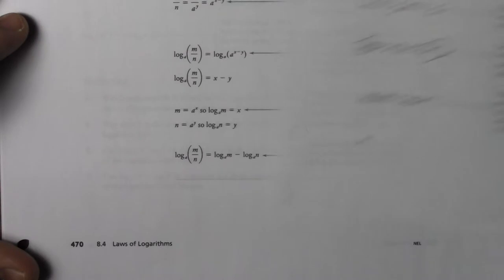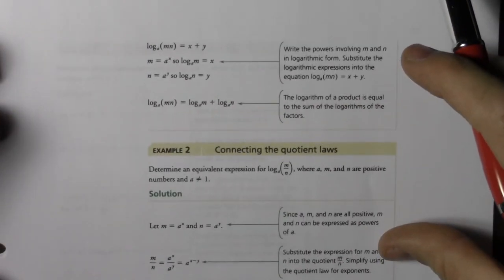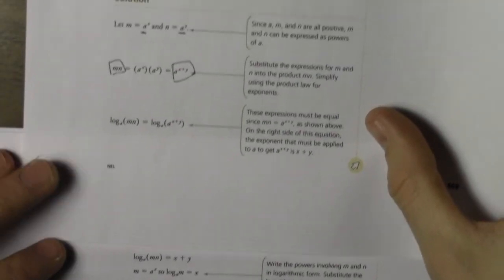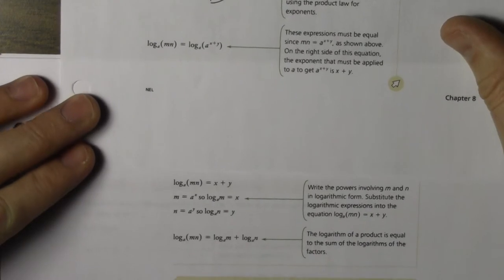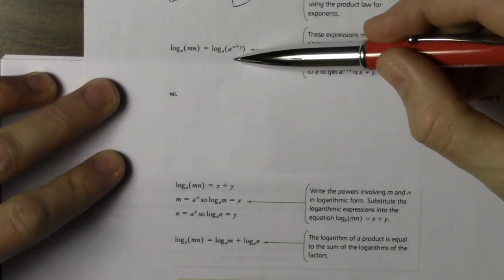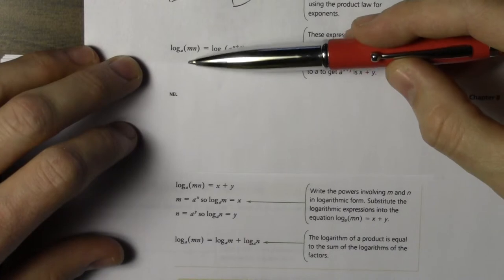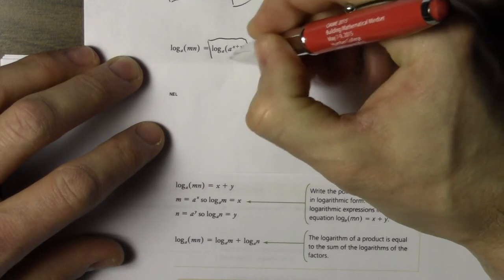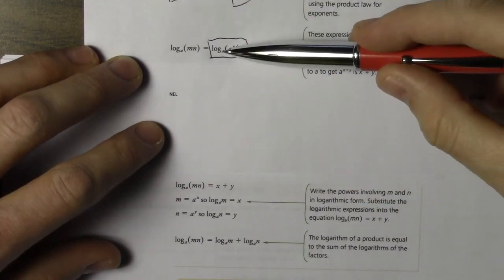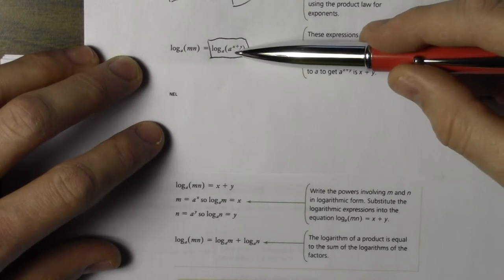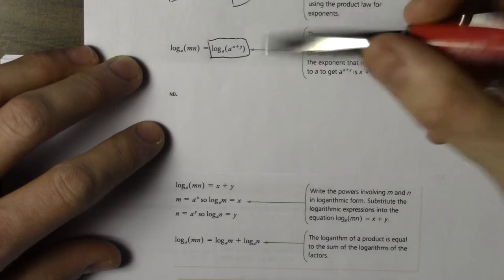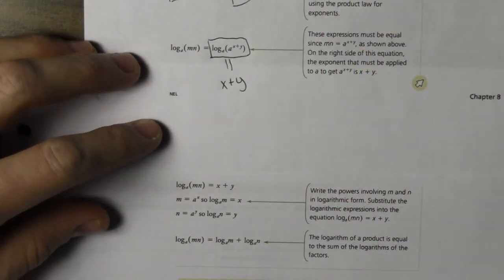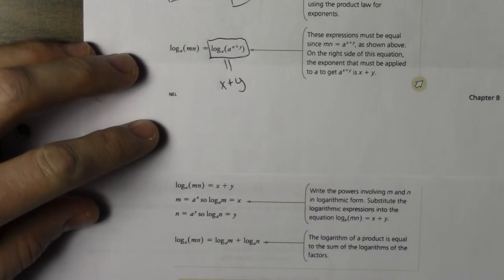Any questions? All right, almost done. Here's where it might get a little confusing for some. I'm going to put this on top so we can see that step. So if we have log base a m n is equal to log base a a^(x plus y). This term here, remember, is the exponent that a needs to be raised to to get the value of a raised to x plus y. So this equals x plus y. Any questions there?